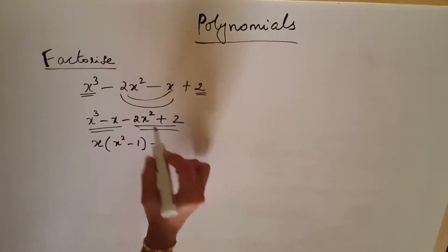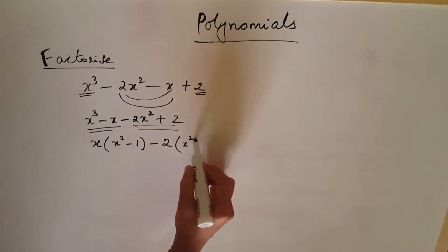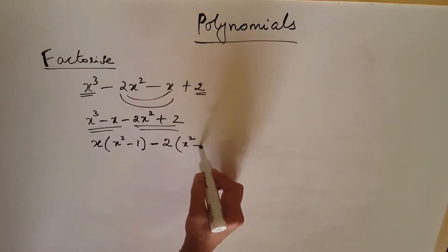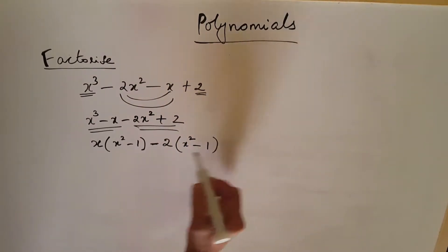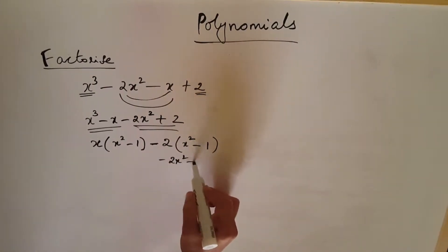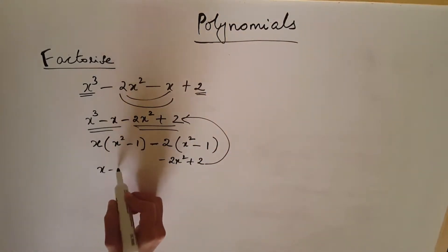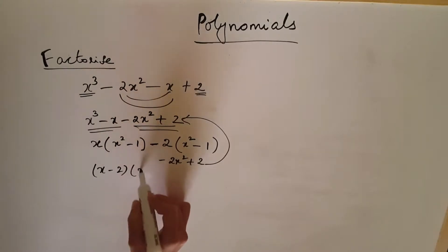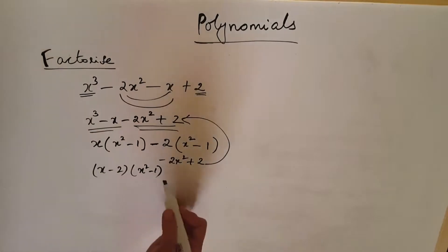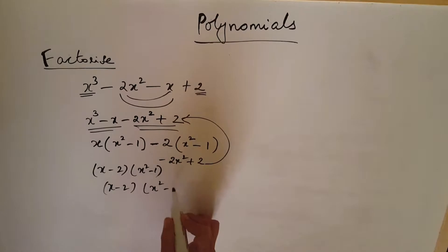Minus, and 2 is common in the second pair, so take 2 outside. You get x squared minus 1. Here is plus, here is minus. So multiplying out: minus 2 times x squared minus 1 gives minus 2x squared plus 2. So you see x minus 2 times x squared minus 1.